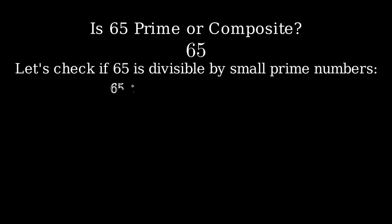Let's start with 2. 65 divided by 2 is 32.5. Since we got a decimal, 65 is not divisible by 2.